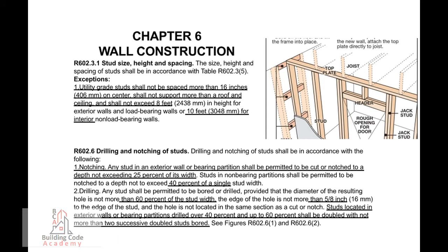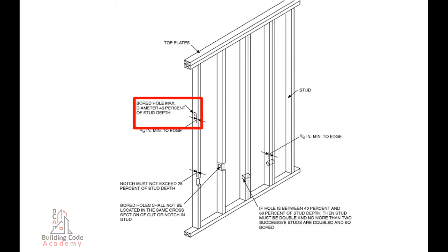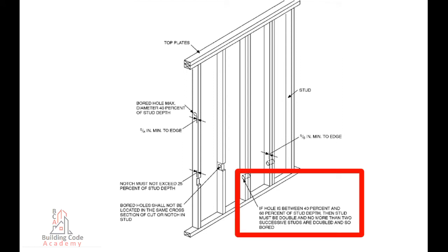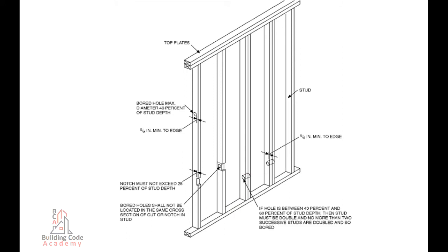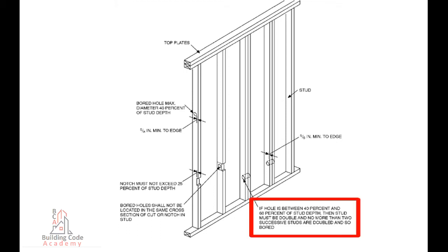R-602.6, Drilling and Notching of Studs. 1. Notching: Any stud in an exterior wall or bearing partition shall be permitted to be cut or notched to a depth not exceeding 25% of its width. Studs in non-bearing partitions shall be permitted to be notched to a depth not to exceed 40% of a single stud width. 2. Drilling: Any stud shall be permitted to be bored or drilled, provided that the diameter of the resulting hole is not more than 60% of the stud width, the edge of the hole is not more than 5/8 inch (16mm) to the edge of the stud, and the hole is not located in the same section as a cut or notch. Studs in exterior walls or bearing partitions drilled over 40% and up to 60% shall be doubled, with not more than two successive doubled studs.